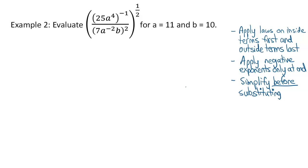On to the second example. The question said simplify that expression, but we're going to add to that — evaluate it for a equals 11 and b equals 10. We're going to do that by first simplifying before we sub those numbers in. A few things to keep in mind: apply laws on the inside terms first and the outside terms last; apply negative exponents only at the end, so we only have to flip things once if necessary; and simplify before substituting.